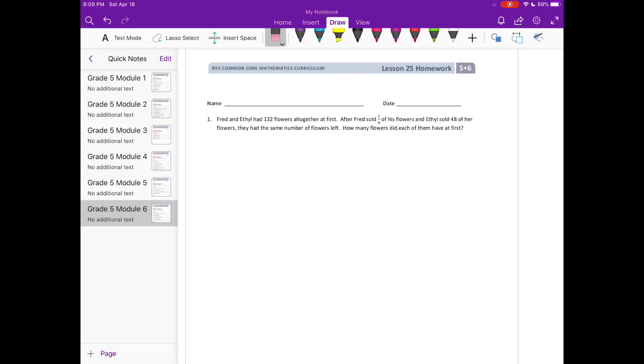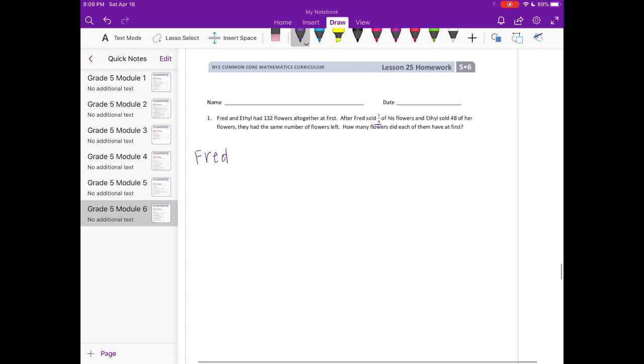So first we have Fred. Fred sold 1/4 of his flowers, so let's make a tape diagram. We know that he had some amount of flowers and then he sold off 1/4 of them. That's really kind of all we know about Fred so far.